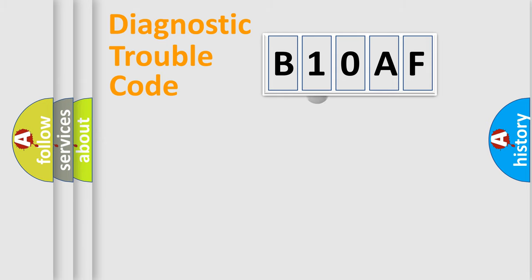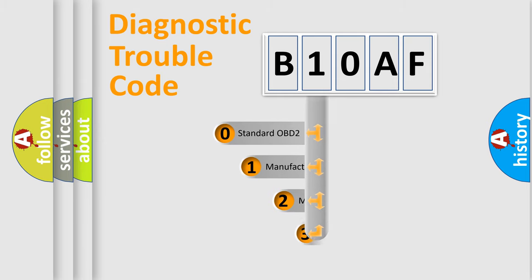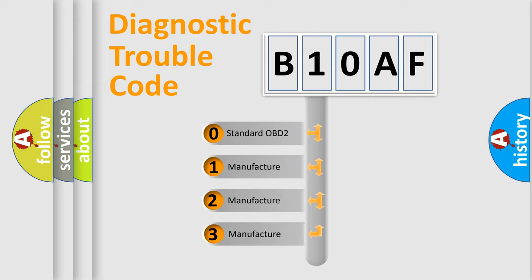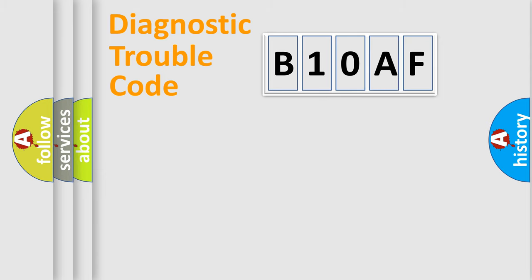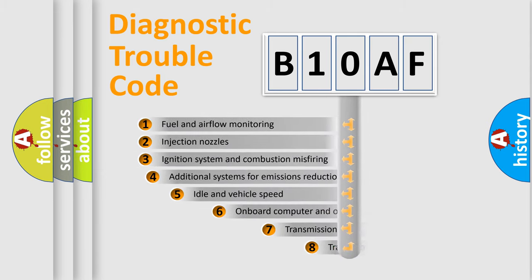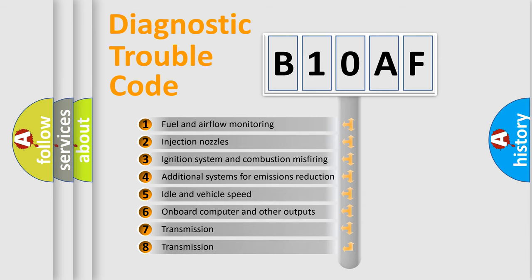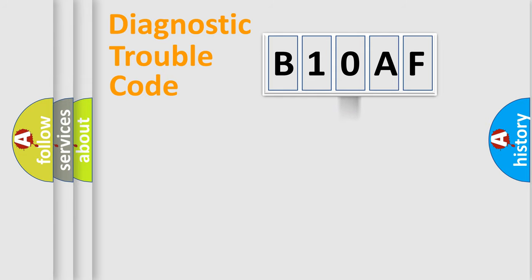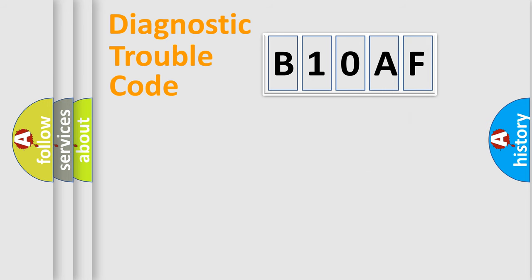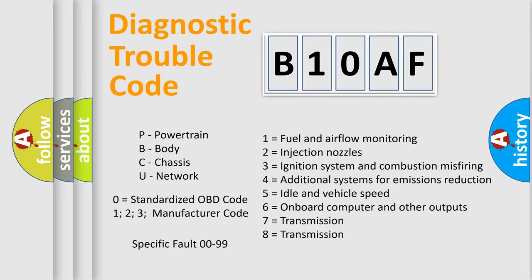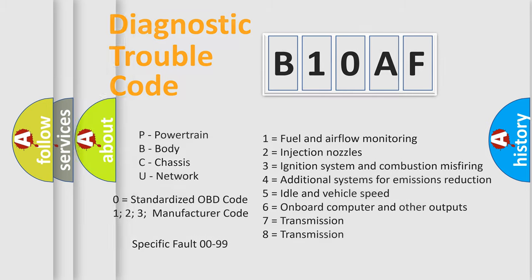This distribution is defined in the first character of the code. If the second character is expressed as zero, it is a standardized error. In the case of numbers 1, 2, or 3, it is a manufacturer-specific error expression. The third character specifies a subset of errors, and this distribution is valid only for the standardized DTC code. Only the last two characters define the specific fault of the group — but only when the second character is zero.